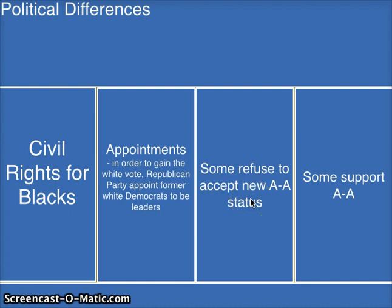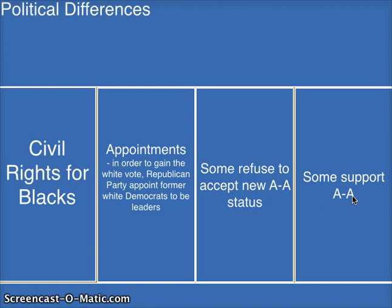There is also an attitude problem in the South. Many white people, even though slavery is gone, have not really accepted that African-Americans have rights, and they don't change their attitudes. Many refuse to accept African-American status. While some do support African-American status, some people believe that support came only to gain political power — those scallywags who joined the Republican Party for power in government, not because they actually believed in the cause.